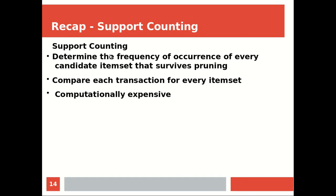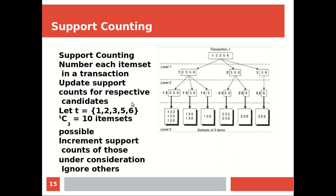پھر support counting use کیا to determine the frequency of occurrence of candidate item sets. Pruning کے بعد frequent item sets generate کرو اور جنہوں نے pruning survive کی ان کا support count نکالو۔ اگر ہر transaction میں جانا پڑے تو یہ computationally expensive ہوتا ہے، اس لئے ہر level پہ صرف انہی candidate item sets کا support count increment کریں جو consider کر رہے ہو — باقی کو ignore کر دو۔